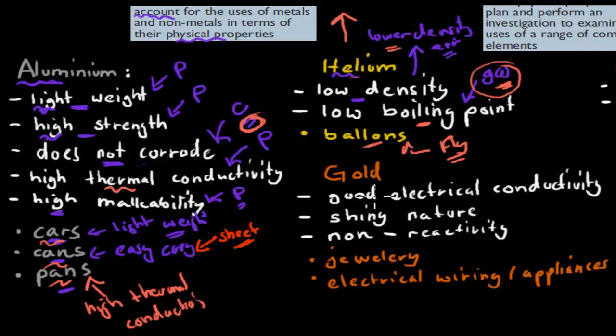Now, gold. Gold has good electrical conductivity. This was a physical property. It's also shiny, so it's lustrous. Again, shininess is a physical property. And it's non-reactive, so it doesn't react with anything. But again, that's a chemical property. Because remember, reactivity has to do with chemical properties. But how does shiny nature and a good electrical conductivity allow us to be used for certain things?